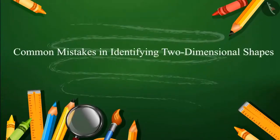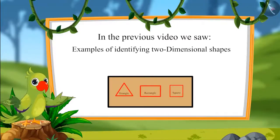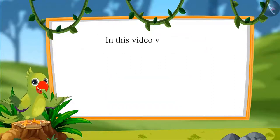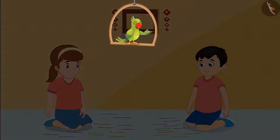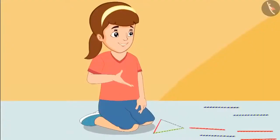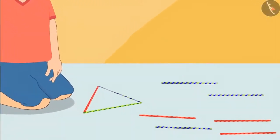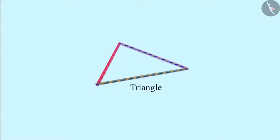Common mistakes in identifying two-dimensional shapes. Today, Chotu and Neha are playing a game with two-dimensional shapes. They have some straws and have to make shapes by joining them. Neha, what are you making? Chotu, I have made a shape out of three straws — can you identify it? Children, do you know which shape Neha has made? Neha, this shape is made of three straws — it means it is a triangle.